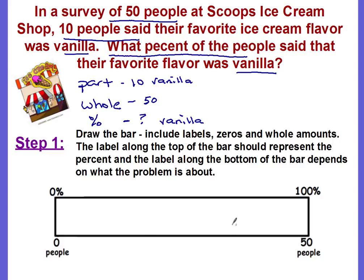If I shade none of the bar, that would be zero percent, which goes on the left side. If I shade the whole bar, that's 100 percent, which goes on the right side. The problem is talking about people surveyed, so zero people goes on the left and the whole number, 50 people surveyed, goes on the right.